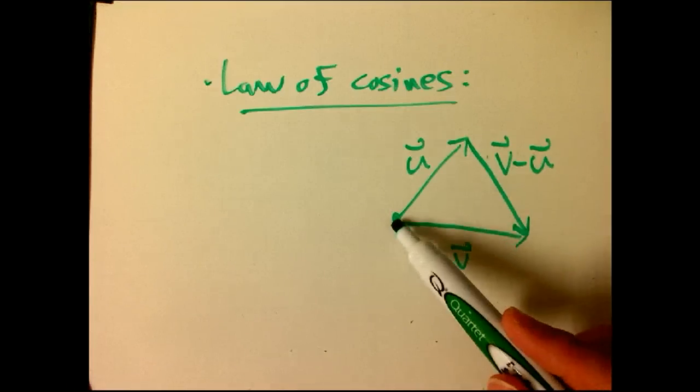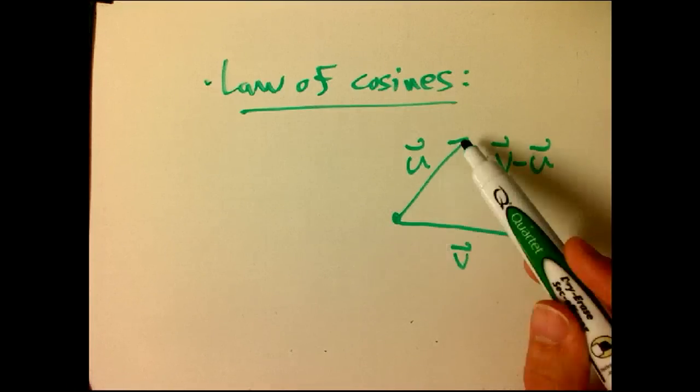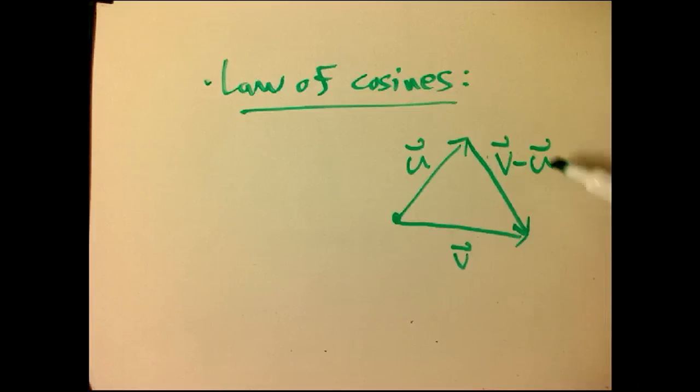And if you don't remember that, you can do the tip-to-tail version of summing, u plus v minus u, but you should cancel, you should get v. Oh, yeah. There's v. Okay. Well, now,